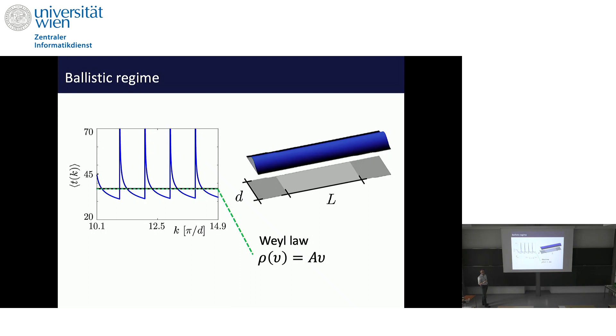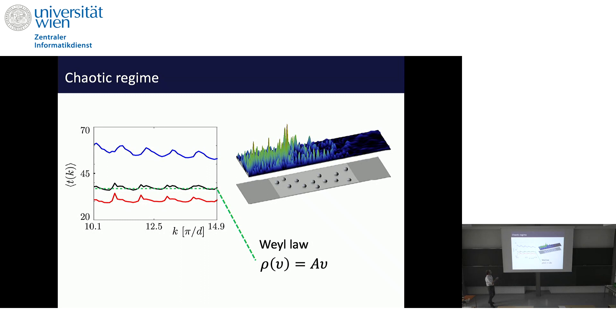We put in some scatterers to make the situation more complicated. The blue curve shows the average time that waves spend when they are transmitted. The red curve shows the average time when waves are reflected. If you average over both of them, you get the black curve, and it's again very well described by the Weyl law. In the numerics, this comes out really well.